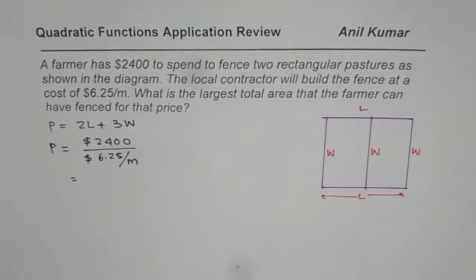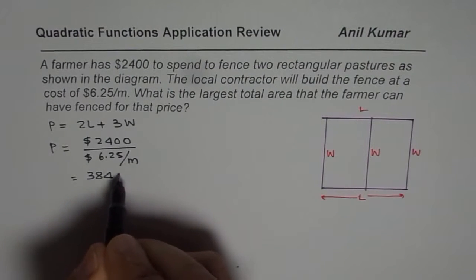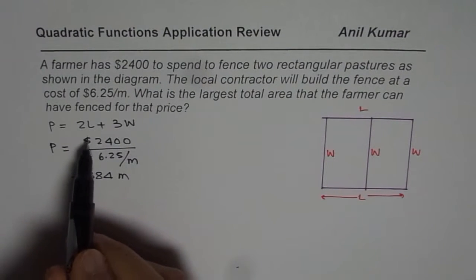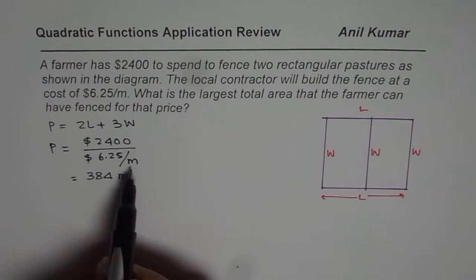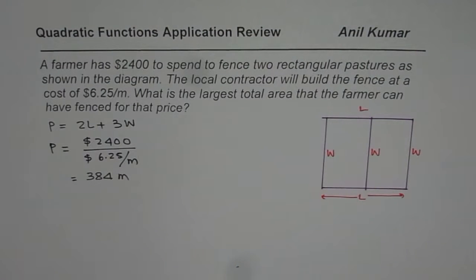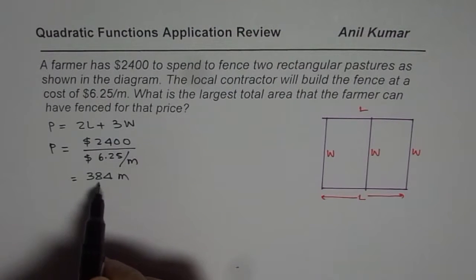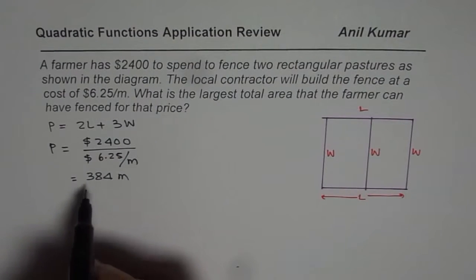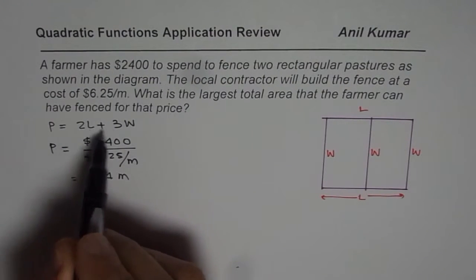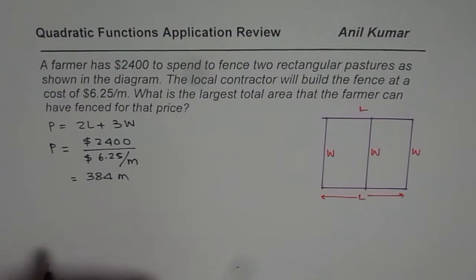That gives us 384 meters. The dollar signs cancel out — dividing by dollars per meter gives meters. So the perimeter we can go for is 384 meters.